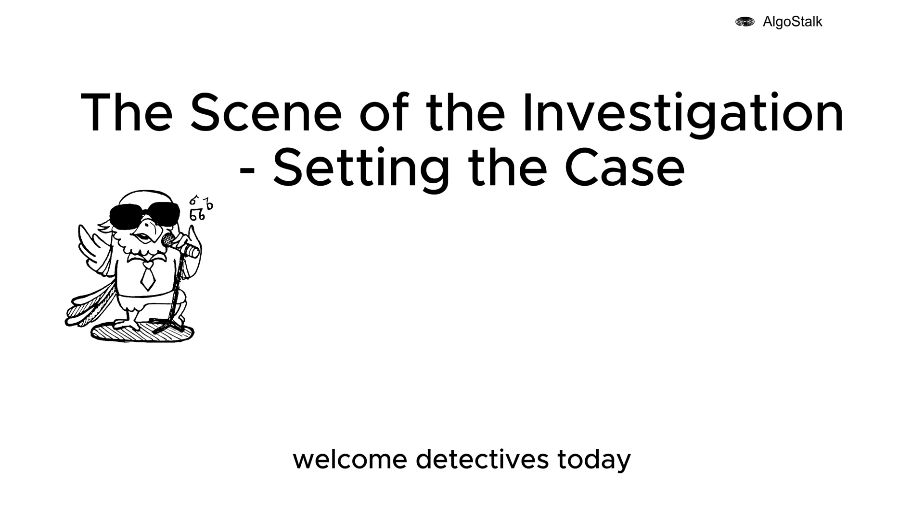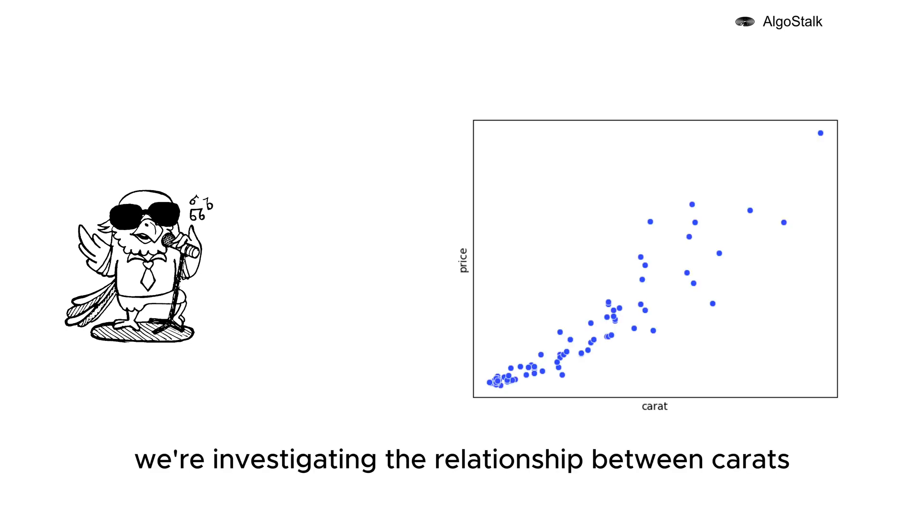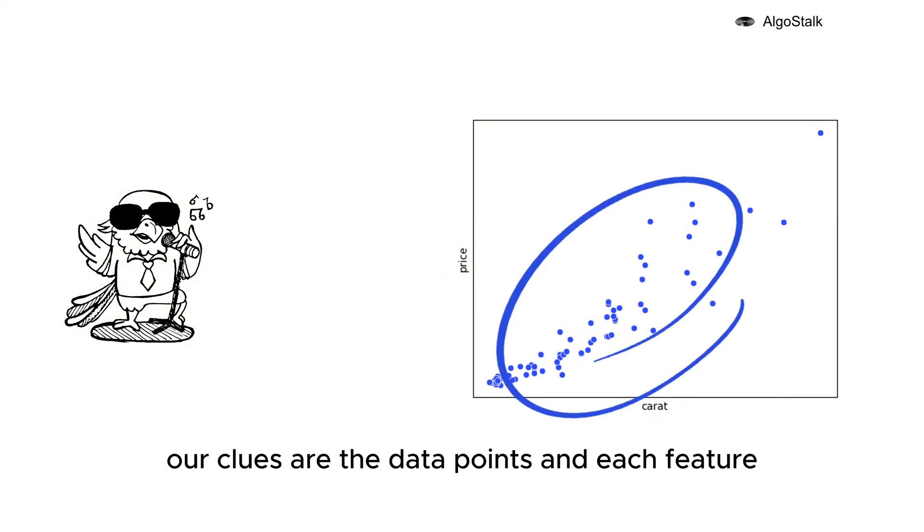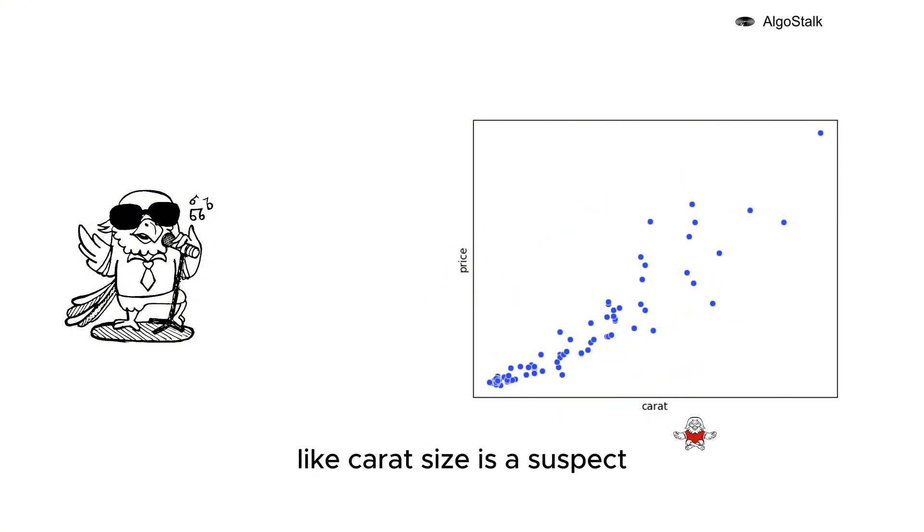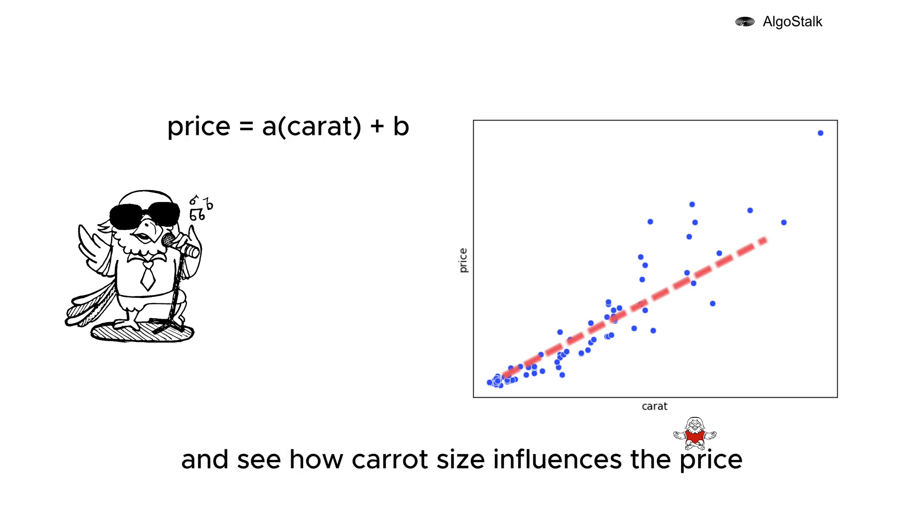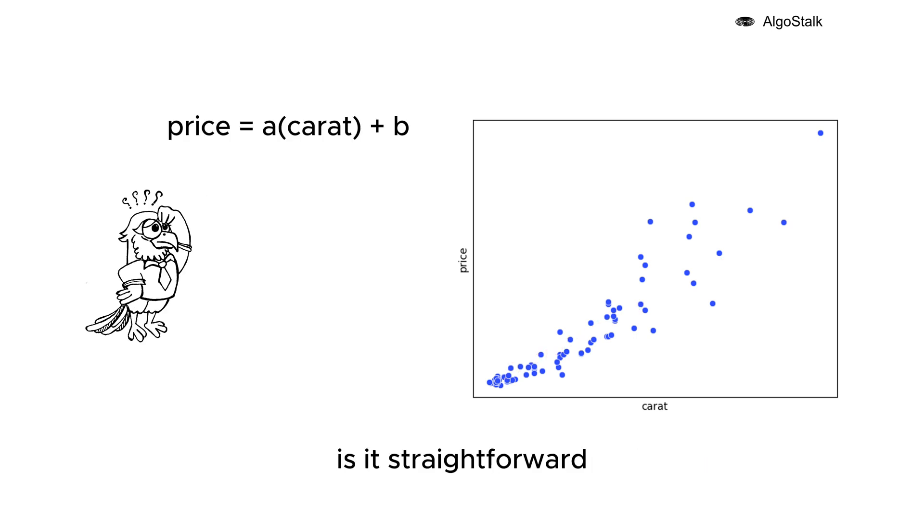Welcome detectives, today we are investigating the relationship between carat size and diamond prices. Our clues are the data points, and each feature like carat size is a suspect. We need to figure out the pattern and see how carat size influences the price. Is it straightforward or do we have some tricky outliers in the mix?